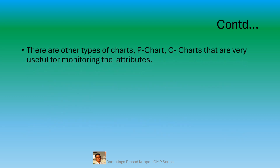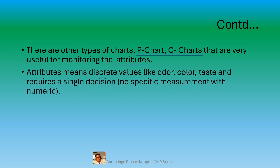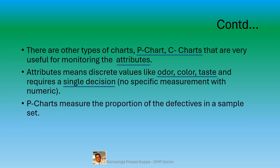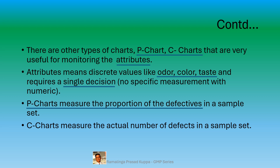Other types of control charts include the P chart and C chart, which are useful for monitoring attributes — discrete values like color, taste, or order that require a single decision rather than numeric measurements. P charts measure the proportion of defectives in a sample set, while C charts measure the actual number of defects. Since most pharmaceutical manufacturing data is numeric, these charts are not discussed in detail here.